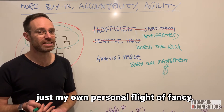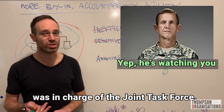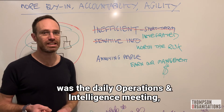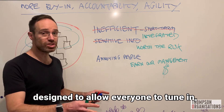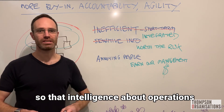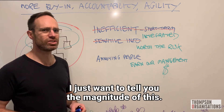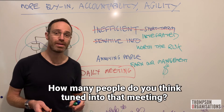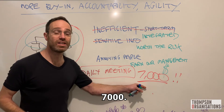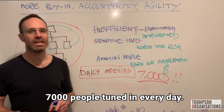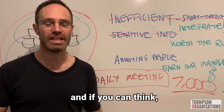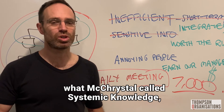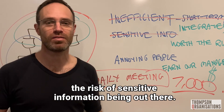In case you think this is just my own personal flight of fancy, General Stanley McChrystal was in charge of the Joint Task Force fighting al-Qaeda in Iraq. One of the key practices adopted was a daily operations and intelligence meeting designed to allow everyone to tune in, so that intelligence about operations and what was coming up next got shared through the whole network. It was a daily meeting — every day, 4 p.m. Iraq time, 9 a.m. Washington time. 7,000 people tuned in every day. The US military included 7,000 people because what McChrystal called systemic knowledge was easily outweighing the risk of sensitive information being shared.